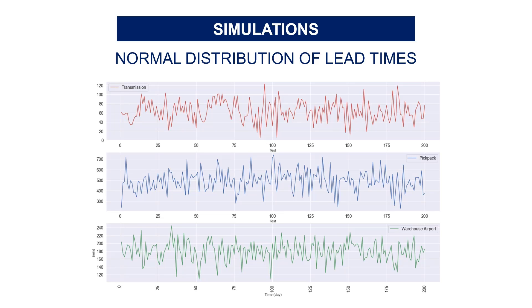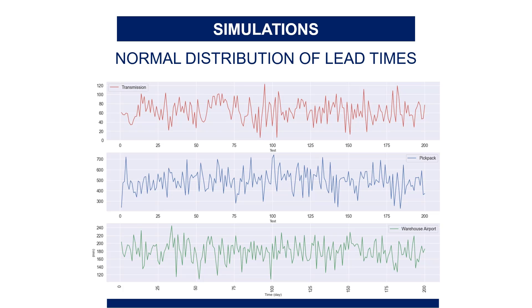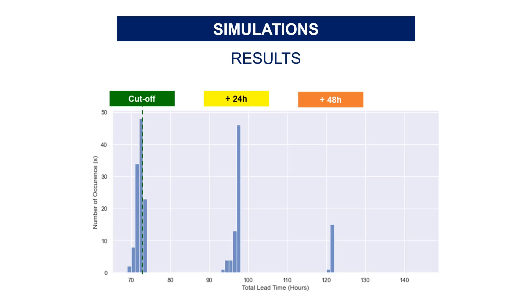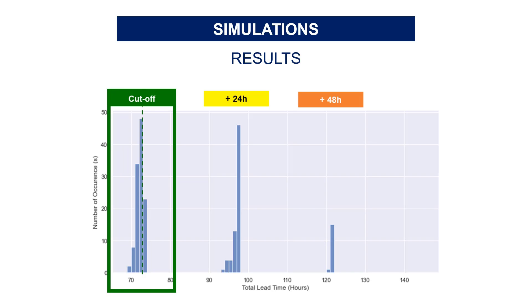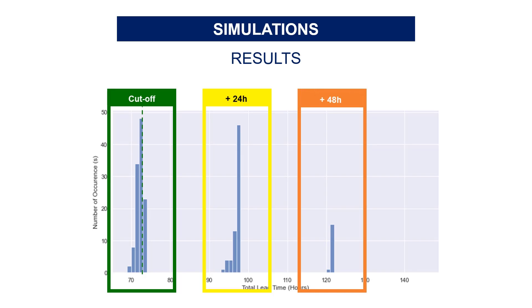Now let's simulate what could happen if we deviate a bit from this perfect scenario. For each process, I added some variability around the target to simulate the reality of operations. From transmission to last-mile delivery, we assume the lead time follows a normal distribution around the target. I generated 200 scenarios. For the normal scenario, the total lead time is 72.5 hours. Results are split into four categories: first, all cutoff times are respected, so your lead time is very close to 72.5 hours. Then you have scenarios that miss one cutoff time, and others that miss two — adding plus 24 and plus 48 hours to total lead time. Fortunately, no scenarios missed three cutoff times.